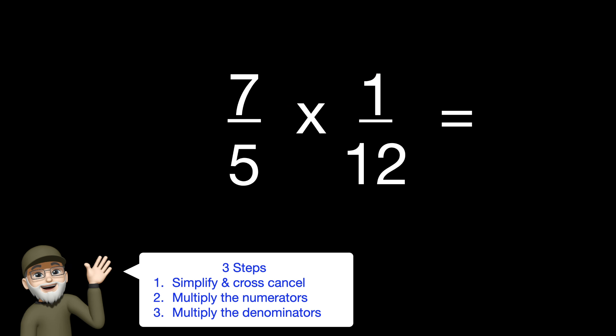Now we're ready to multiply. We will multiply the numerators on top. 7 times 1 would be 7. And then the denominators on the bottom, 5 times 12 is 60. And our answer would be 7 sixtieths.